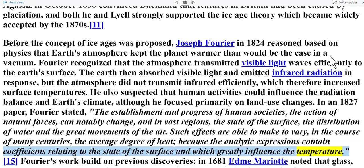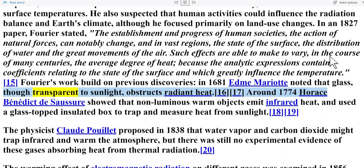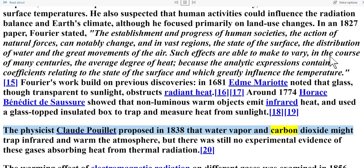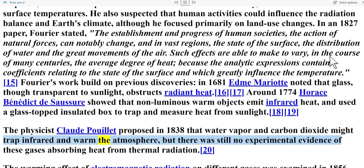Fourier's work built on previous discoveries. In 1681, Edmé Mariotte noted that glass, though transparent to sunlight, obstructs radiant heat. Around 1774, Horace Bénédict de Saussure showed that non-luminous warm objects emit infrared heat, and used a glass-topped insulated box to trap and measure heat from sunlight. The physicist Claude Pouillet proposed in 1838 that water vapor and carbon dioxide might trap infrared and warm the atmosphere, but there was still no experimental evidence of these gases absorbing heat from thermal radiation.